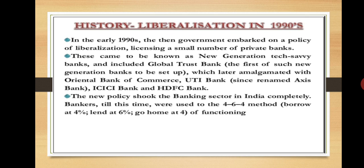In the history of liberalization in the 1990s, the government embarked on a policy of liberalization, licensing a small number of private banks. These came to be known as new-generation tech-savvy banks and included Global Trust Bank — the first such new-generation bank to be set up, which later amalgamated with Oriental Bank of Commerce — UTI Bank (since renamed Axis Bank), ICICI Bank, and HDFC Bank. The new policy shook the banking sector; bankers till this time were used to the 4-6-4 method: borrow at 4%, lend at 6%, and go home at 4 o'clock.